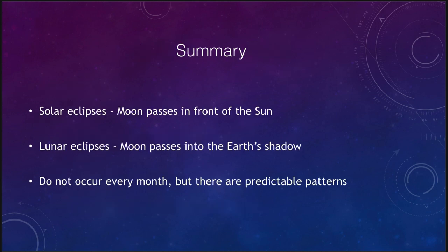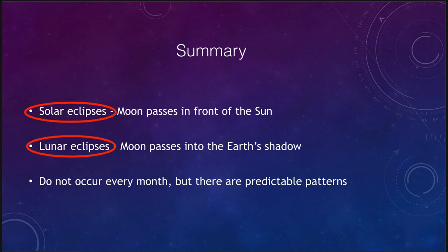To summarize: we've talked about two types of eclipses — solar eclipses where the moon passes in front of the sun and blocks its light, and lunar eclipses where the moon passes into the earth's shadow. We do not get an eclipse every month, but there are predictable patterns as to when they will occur, so an astronomer can easily tell you when the next eclipse will happen in any given area. That concludes our discussion of eclipses — we'll be back for another topic in astronomy. Have a great day everyone.